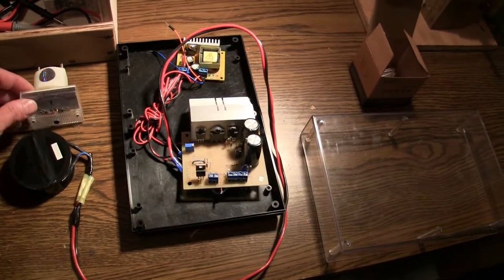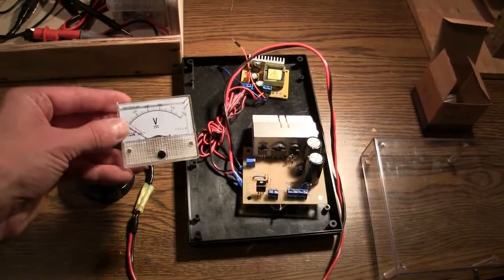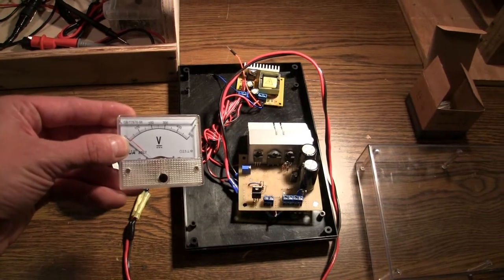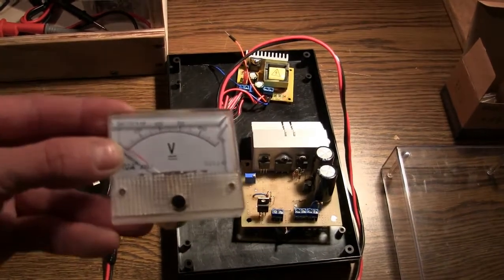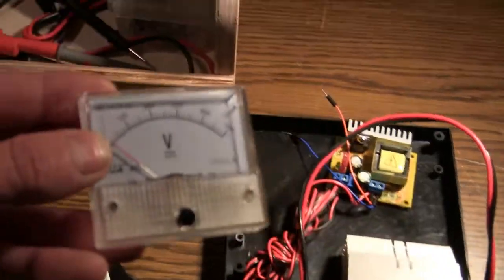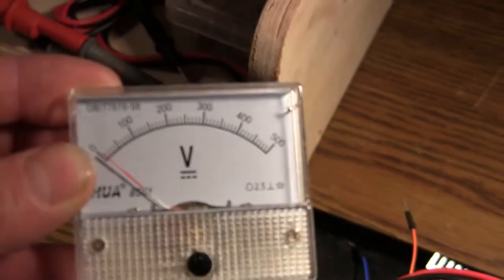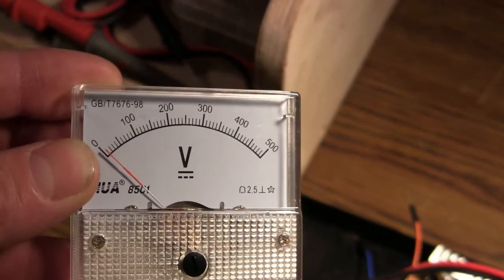And I've also got this little guy here, which is an analog screen that's DC, and it goes all the way up to 500 volts, so that would work really well.